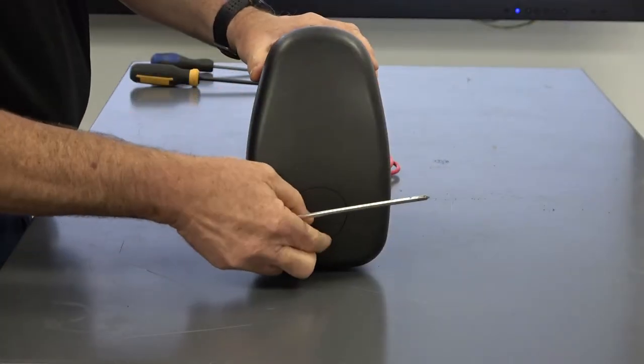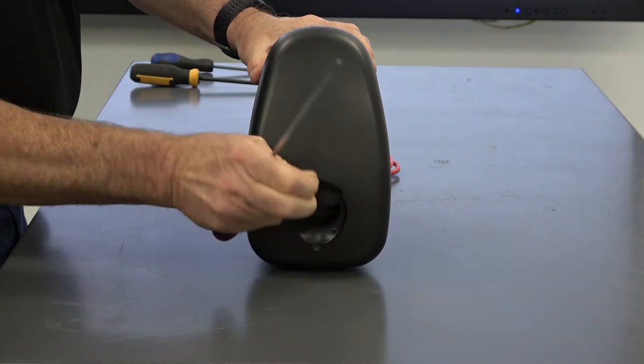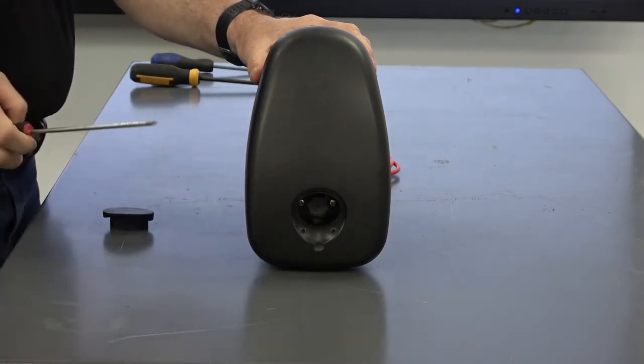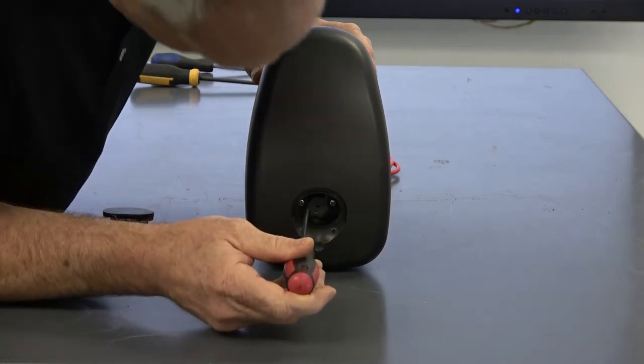Remove the rubber cap that conceals the manual override access port. Remove the two Phillips-head screws contained within.